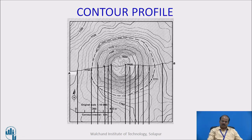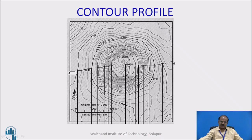To draw a contour profile, an alignment has to be chosen. Here, we have chosen alignment connecting A to B, and across this particular alignment, wherever there is intersection of the contour lines, all those points are of utmost significance to us. There is intersection at this point for a contour of 7725 RL, there is intersection at this point corresponding to the highest point available along this alignment. Then there is intersection at this dark contour of 7725 RL, then there is intersection of 7700, and successively at every 25 meter interval, whatever are the intersections, those have been marked. At each of these points, we have drawn a vertical ordinate passing through these particular points.